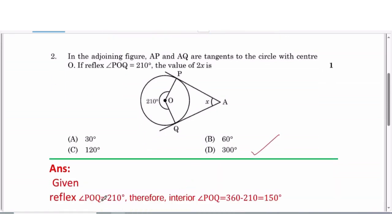Given reflex angle POQ equals 210 degrees, therefore the interior angle POQ will be 360 degrees minus the reflex angle POQ, that is 210. So it will be equal to 150 degrees. Therefore the interior angle POQ is equal to 150 degrees.